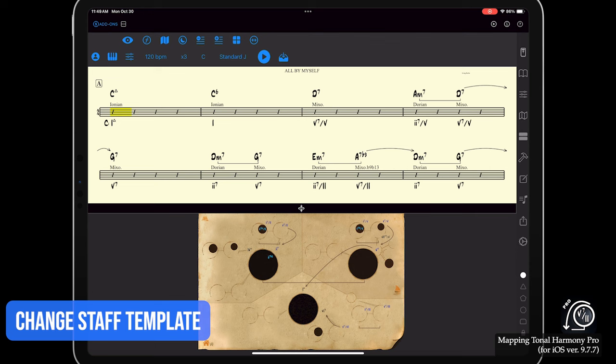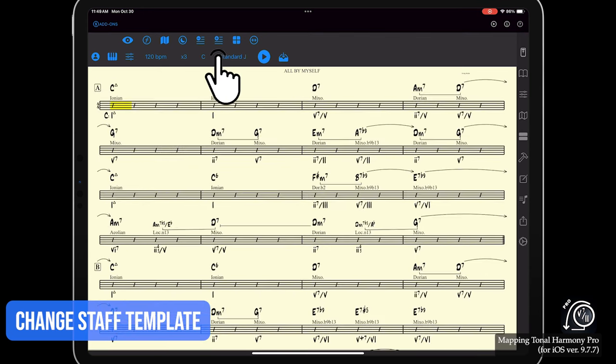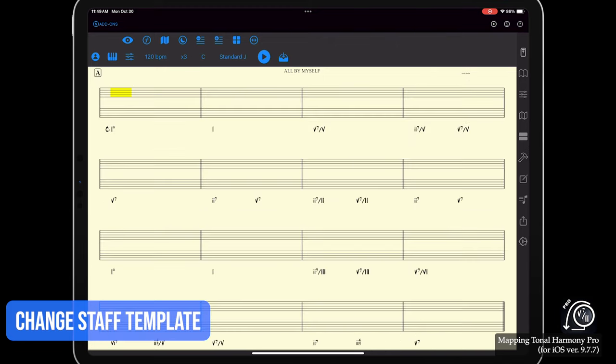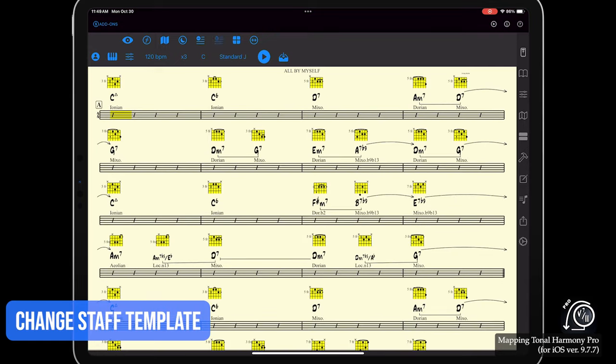To change the way the chart looks, you can browse through all the different presets with the staff plus or staff minus buttons. The staff plus goes to the next preset and the minus to the previous one.